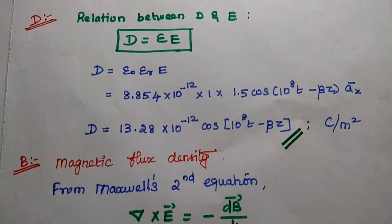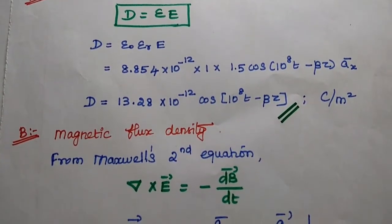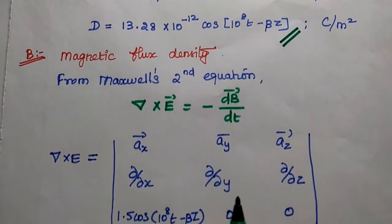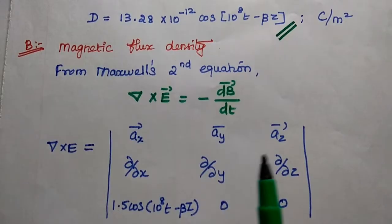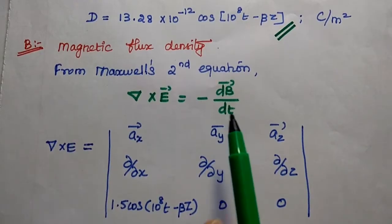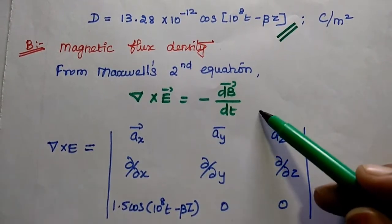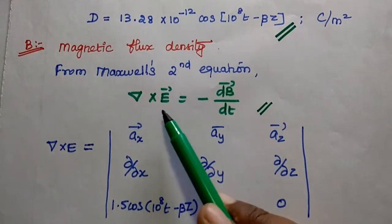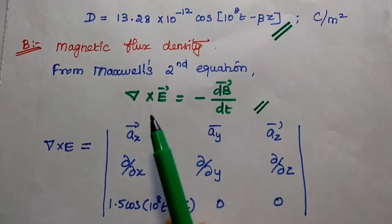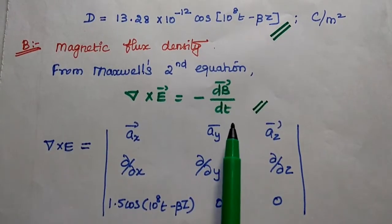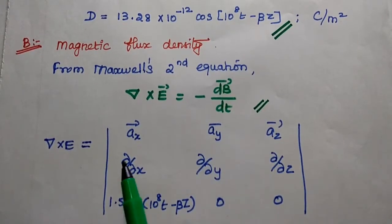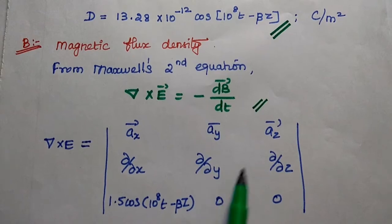Next we are going to find out the magnetic flux density B. For that we consider Maxwell's second equation: ∇ × E = −∂B/∂t. We will compute the left-hand side, del cross E, then equate to the right-hand side. Setting up the curl determinant with rows â_x, â_y, â_z; ∂/∂x, ∂/∂y, ∂/∂z; and E components.